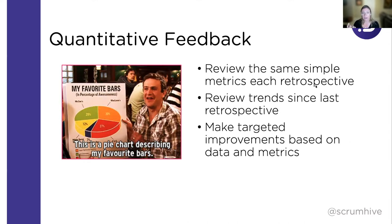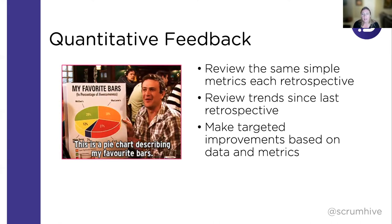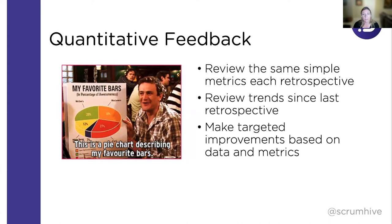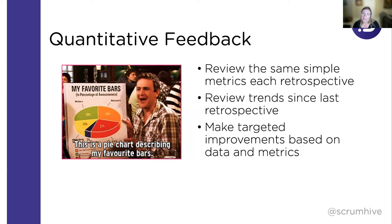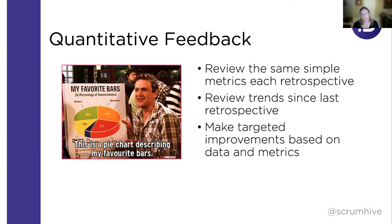Equally important is quantitative feedback. We want to look at the same simple metrics at every retrospective. I'm a big fan of flow metrics — cycle time, work in progress, and throughput — at every retro, looking at trends since the last one to see if we're going up or down over time. This connects qualitative feedback to quantitative feedback, so we can say things like: 'Our cycle time went up this sprint, and it also looks like we had an outage that pulled people off their work.'